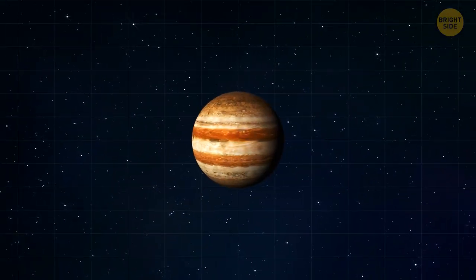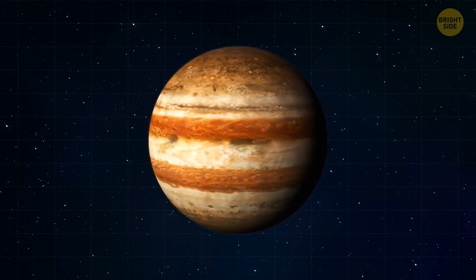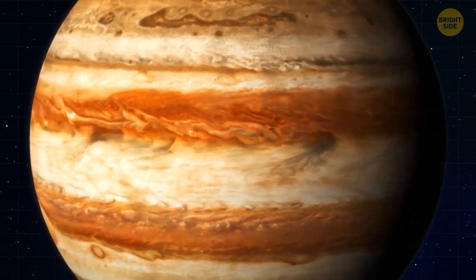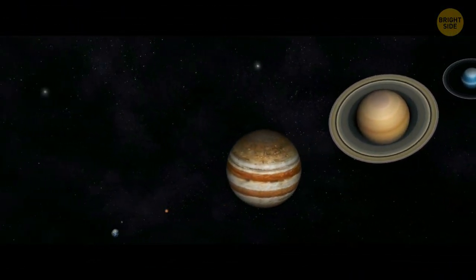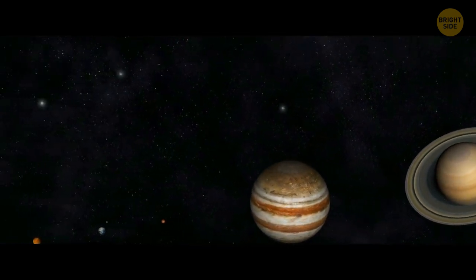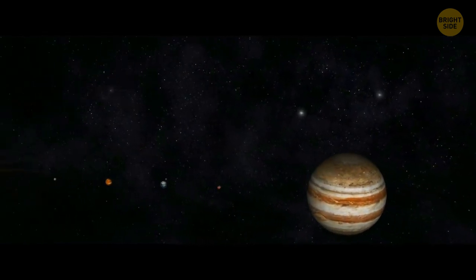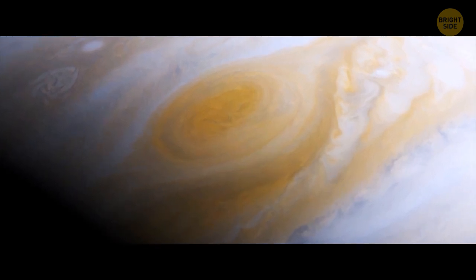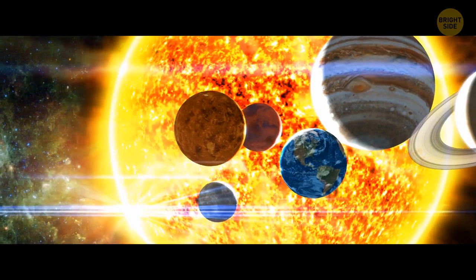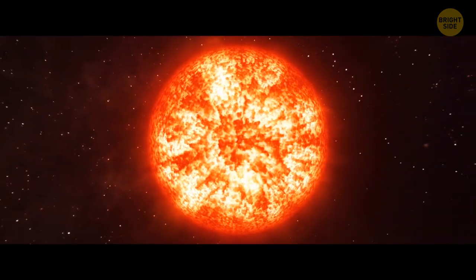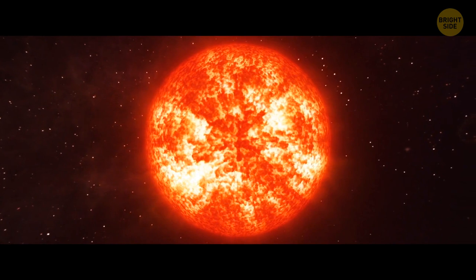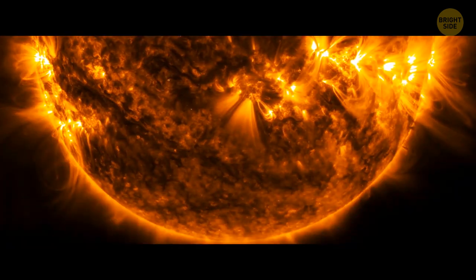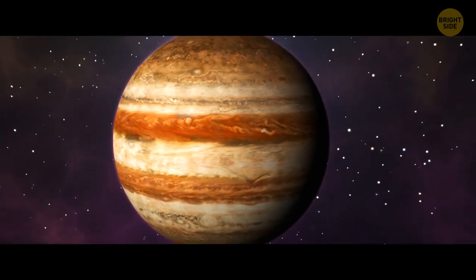Now, if Jupiter suddenly decided to keep growing, it would eventually become a star. And its composition would allow this planet to do it. Once, a long, long time ago, Jupiter took most of the mass that was left after the formation of our Sun. That's how it ended up with more than twice the combined material of all other bodies in the solar system. And the planet's ingredients are the same as those of a star, mostly hydrogen and helium. Jupiter is just not massive enough to ignite. But what if it was?